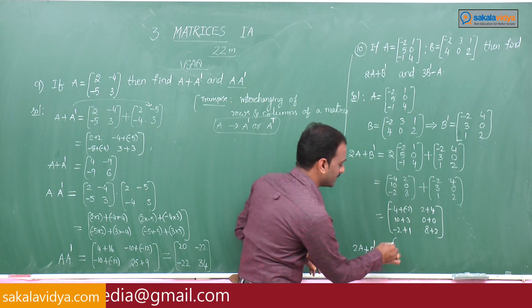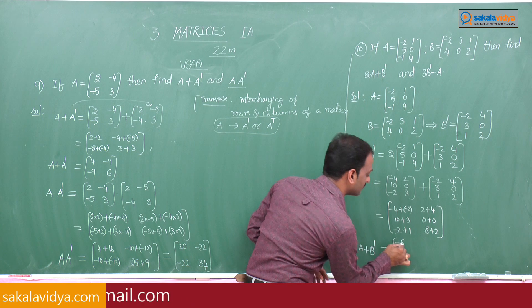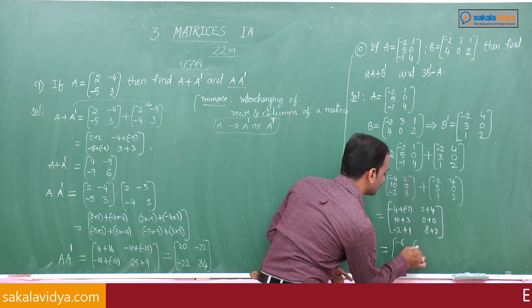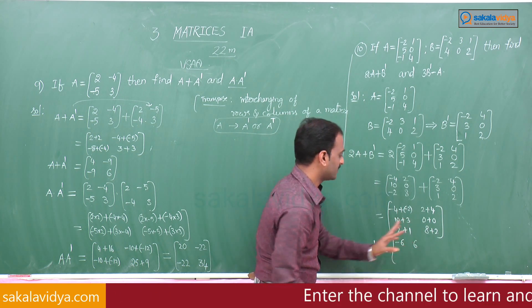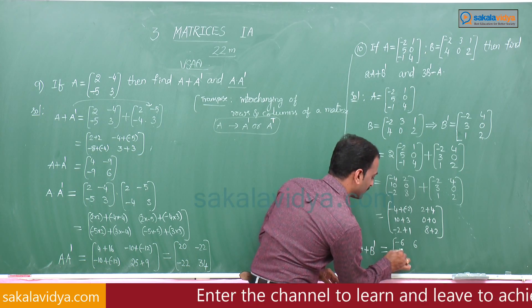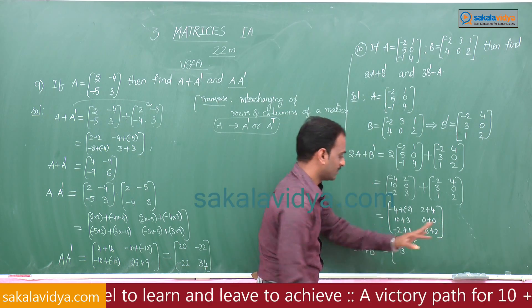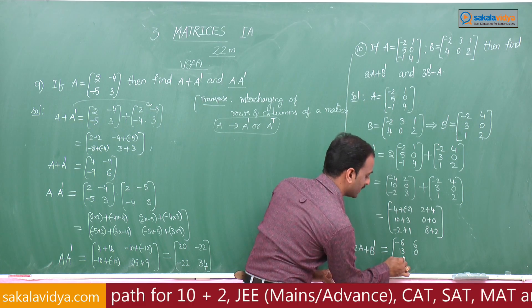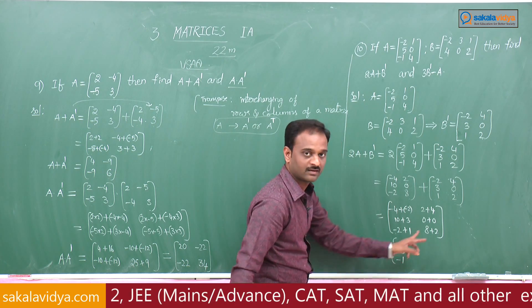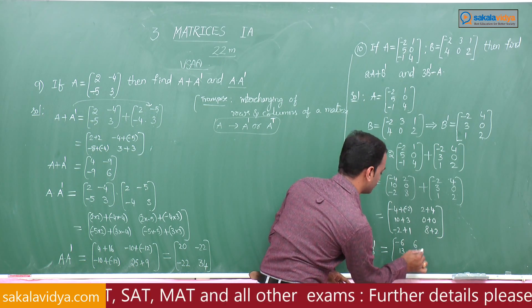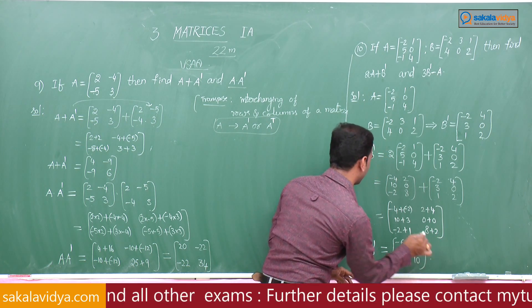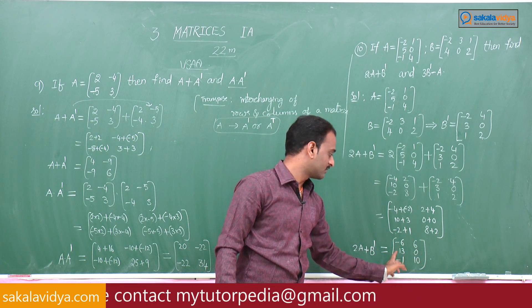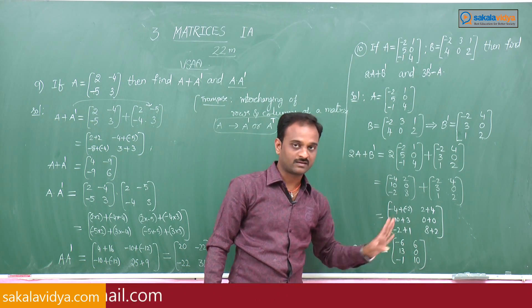The value of 2A plus B dash equals: -4+(-2)=-6, 2+4=6, 10+3=13, 0+0=0, -2+1=-1, 8+2=10. So 2A plus B dash equals [[-6, 6, 13], [0, -1, 10]].